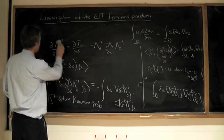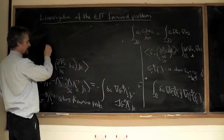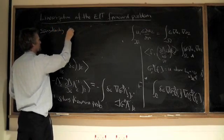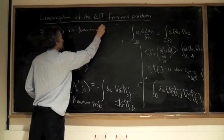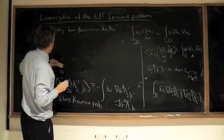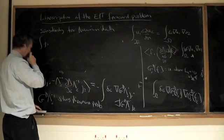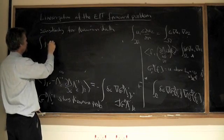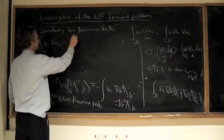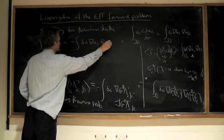So what we've got is that the sensitivity for Neumann data is actually, we can write it. Let me write it like this: j1 times delta U2 on the boundary is equal to minus the integral of delta sigma grad U1 dot grad U2.